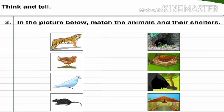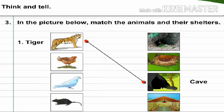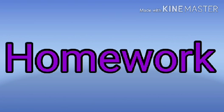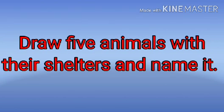Next question: in the picture below, match the animals and their shelters. Number 1: Tiger lives in a cave. Number 2: Hen lives in a coop. Number 3: Bird lives in a nest. Number 4: Rat lives in a hole. Now it's homework time — draw 5 animals with their shelters and name them.